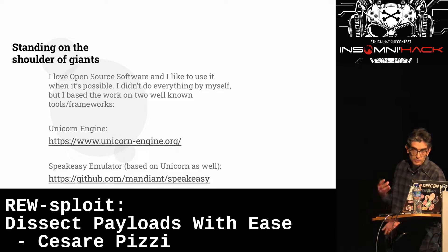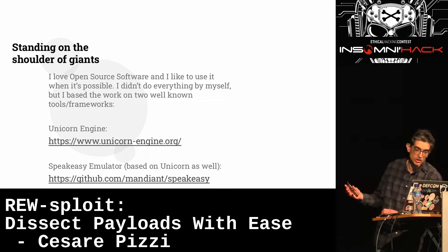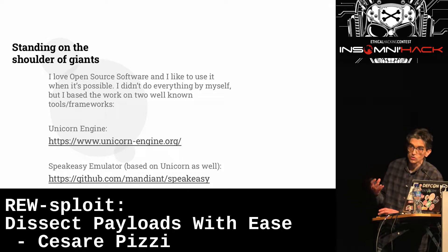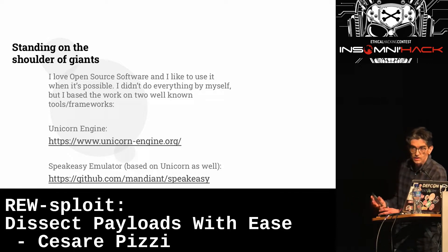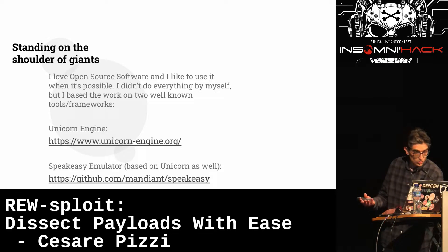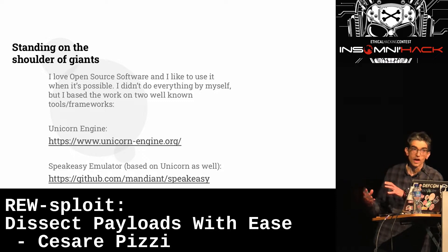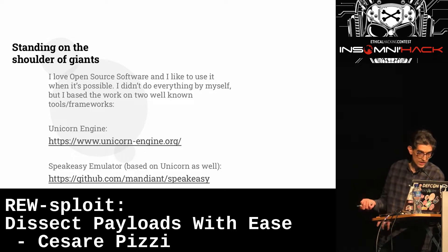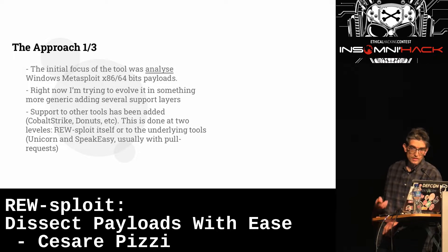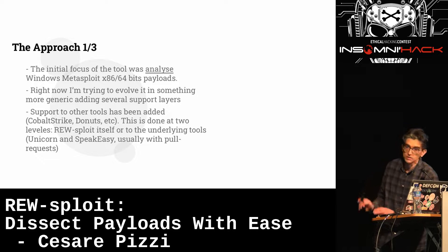RE-sploit is built on two main pillars. The first is Unicorn Engine — probably most of you know it — it's a CPU emulator based on QEMU, which allows you to emulate CPUs in a given environment. The second pillar is SpeakEasy, a tool from Mandiant, which acts as a helper on top of Unicorn to emulate Windows payloads in an easier way. My original focus was Windows Metasploit 32-bit and 64-bit payloads.